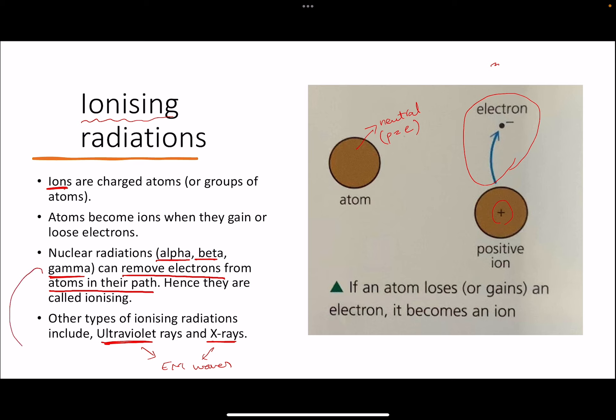But x-rays and ultraviolet rays do not come out of the radioactive nucleus. Hence we don't call them nuclear radiations, but we do call them ionizing because they also have enough energy sometimes to ionize the atoms.